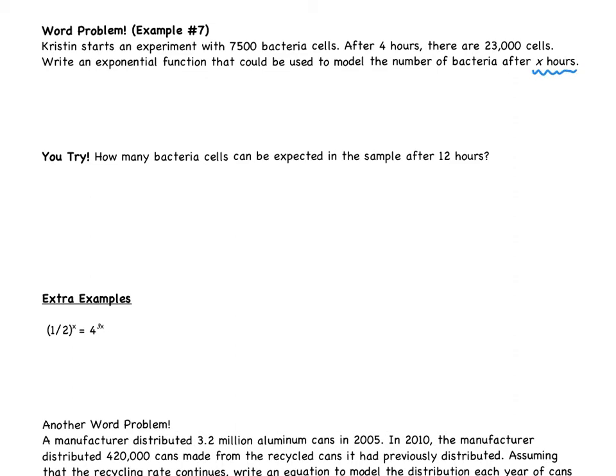We are told, though, what our x variable is going to be. So in our ordered pairs, x is going to stand for hours. Now we've got to think, what do we think that y stands for? Well, the only other variable we have is the number of bacteria, or the number of bacteria cells. It says Kristen starts an experiment. If she starts an experiment, zero hours have passed. And then there are 7,500 bacteria. After four hours, so this is another ordered pair, there are 23,000 bacteria. And now we're in the same position that we were before.